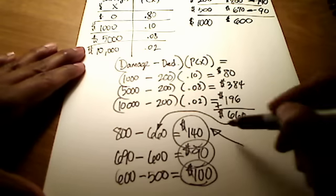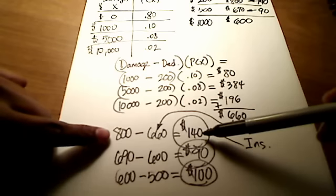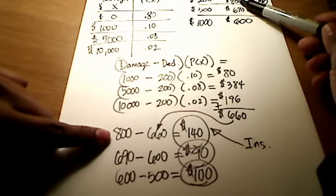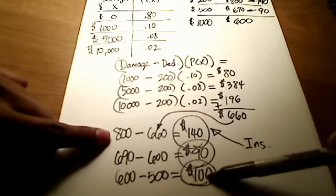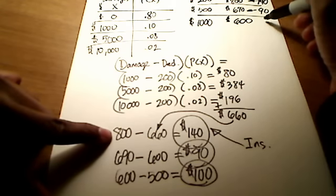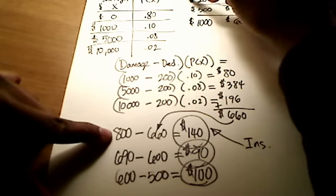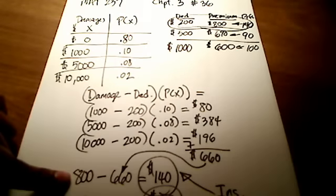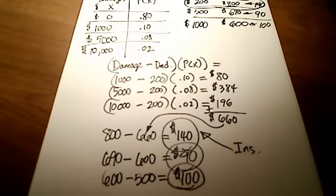The insurance company really wants to sell this policy right here. They really want to sell the $200 deductible at $800 premium policy because, look, it gains the most profit out of these three numbers for them. Out of $140, $90, and $100, this top policy right here is the best one for the insurance company. OK, I hope you can see that there. And that should cover question number 36.